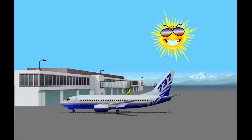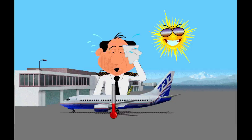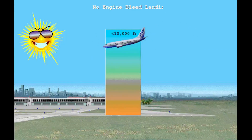Let's look at the steps necessary to perform a no-engine bleed takeoff and landing. If additional thrust for takeoff is necessary, perform a no-engine bleed takeoff. The APU is necessary for a no-engine bleed takeoff and landing. If additional thrust is necessary for a go-around, perform a no-engine bleed landing. The steps for a no-engine bleed landing are the same as a no-engine bleed takeoff, but you do the steps during descent when below 10,000 feet.